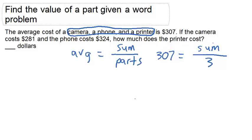So this sum can be found by multiplying 307 by 3, and this is going to come out to $921.